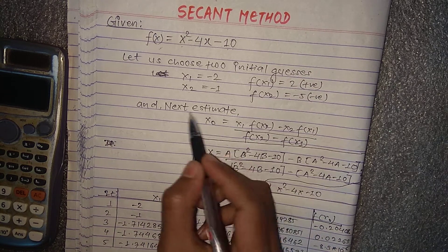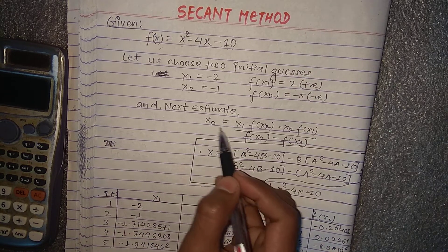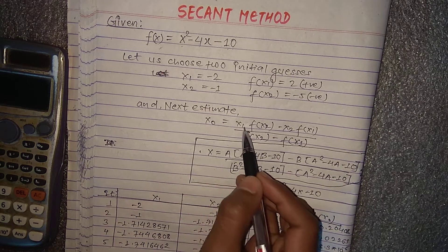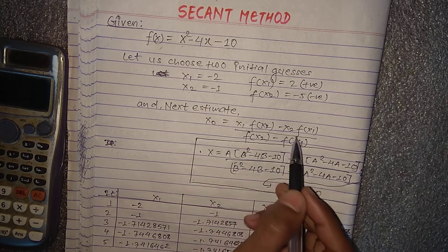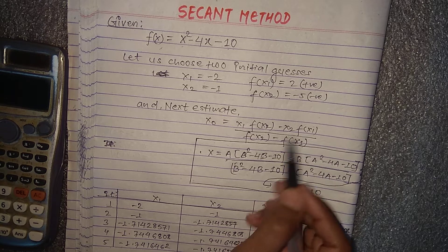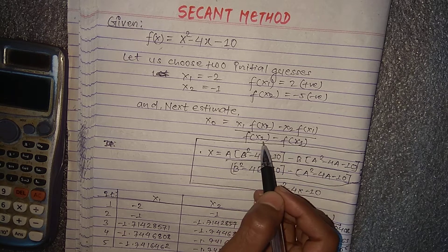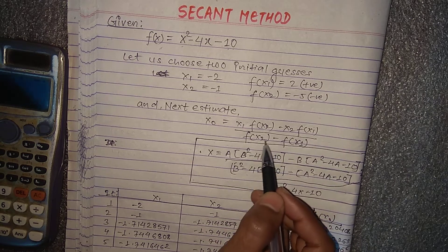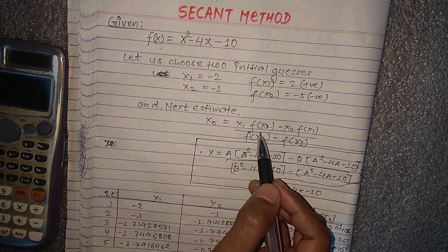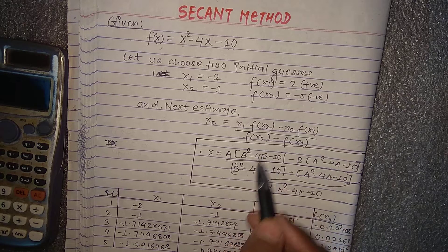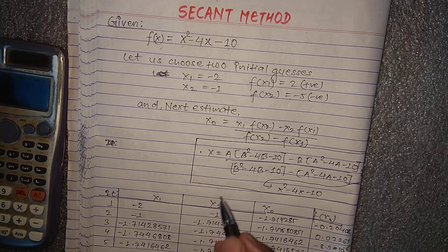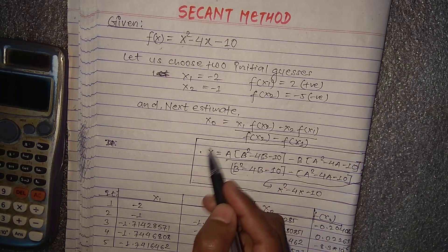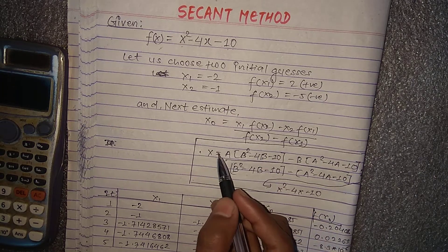We have the formula for the next estimate: x0 equals (x1·f(x2) - x2·f(x1)) / (f(x2) - f(x1)). Using this formula we can find a root using the Secant method.